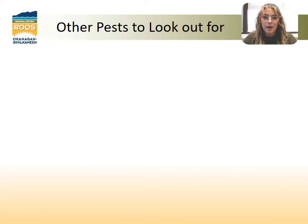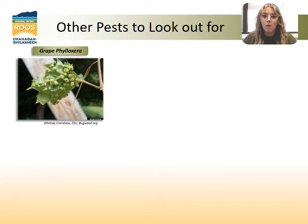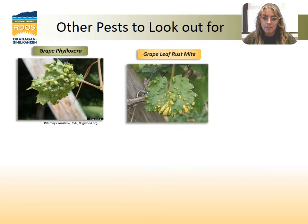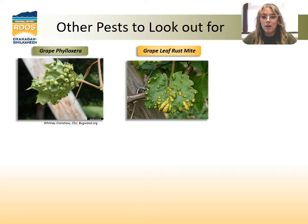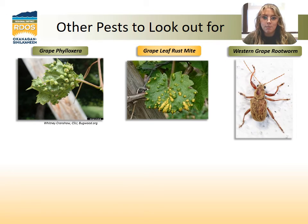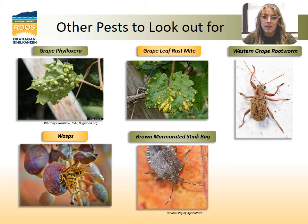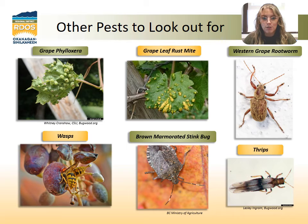There are many other pests that can affect your grapevine and should be understood and looked for if any damage is seen. Grape phylloxera, grape leaf rust mite, western grape rootworm, wasps, brown marmorated stink bug, and thrips can all cause damage to your grapes and vine. The brown marmorated stink bug should be of note because the presence of only a few can taint your wine, and it can cause lots of damage on other crop types extending beyond grapes and must be reported to the BC Ministry of Agriculture.